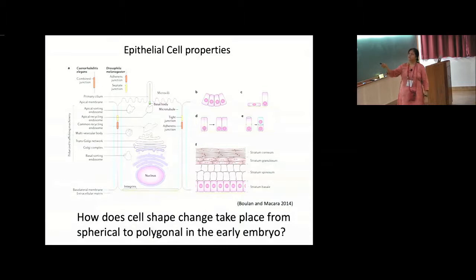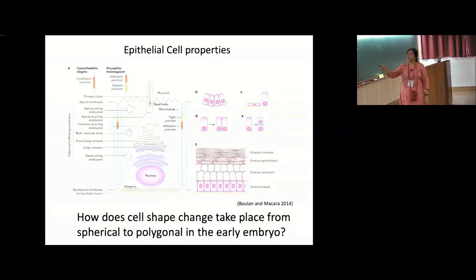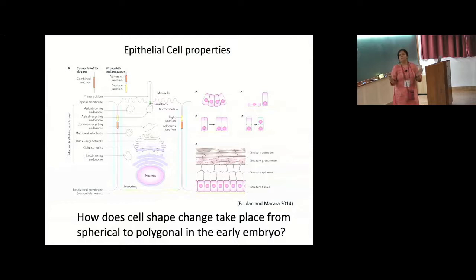If one looks at this cell in a particular section it is rectangular. These cells are present attached to each other — they are epithelial in nature. This membrane, which is rather not studied, has a lot of adhesive properties. It could be thought of as two distinct regions being regulated in two different ways. The first cell-shape transition which happens is a circular to polygonal transition.